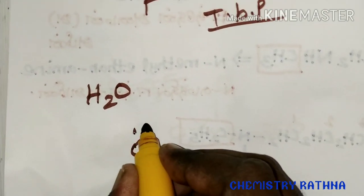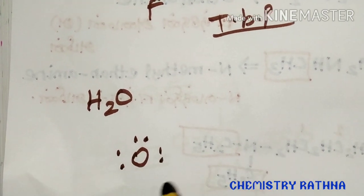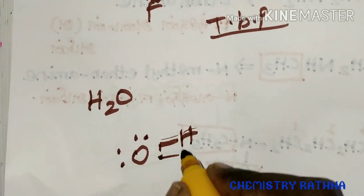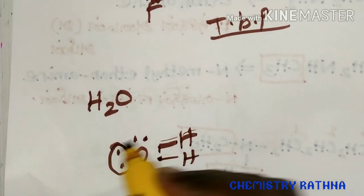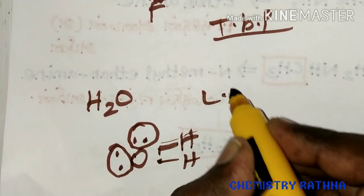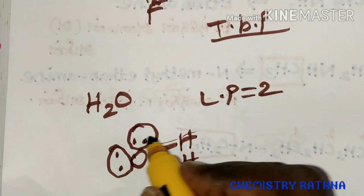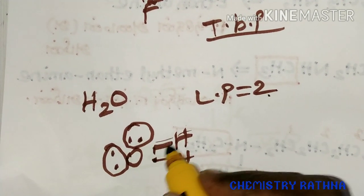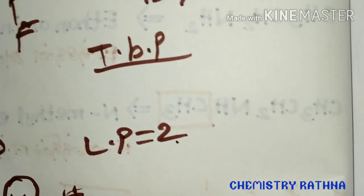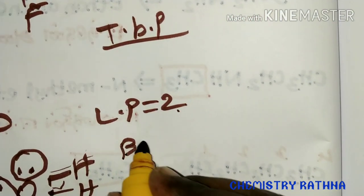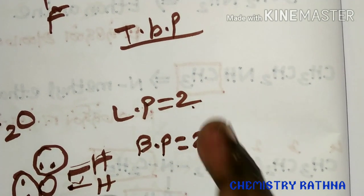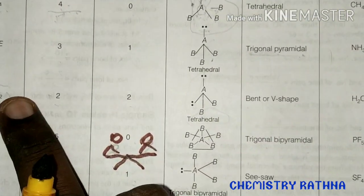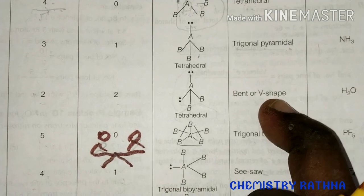Now, how many lone pairs? There are 2 lone pairs. Here is a hydrogen, and here is a lone pair. The lone pair is 2. With 2 bond pairs and 2 lone pairs, it is V shape — the same as water. Looking at the two bond pairs and two lone pairs, the shape is V shape.